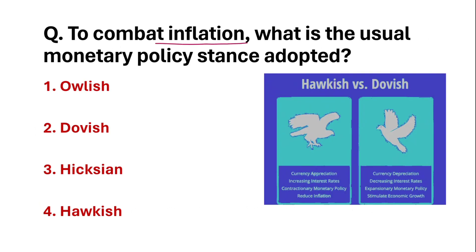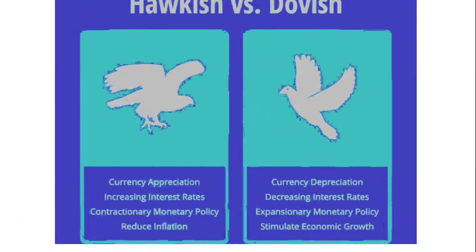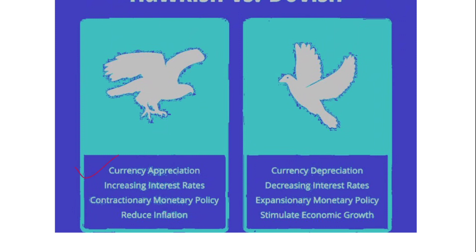To combat inflation, which is the usual monetary policy stance adopted? To reduce inflation, the monetary policy adopted is hawkish. In hawkish policy, the interest rate is increased so that inflation will decrease. This is a contractionary monetary policy which is used to reduce inflation.